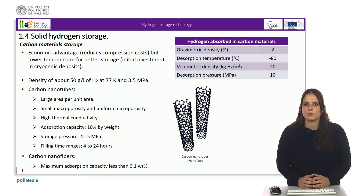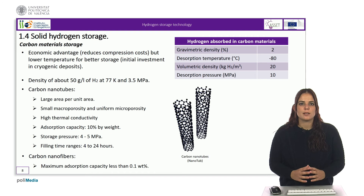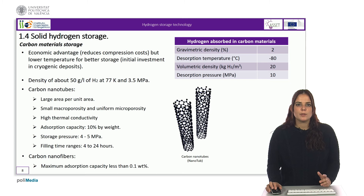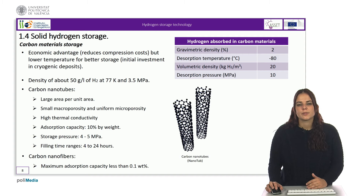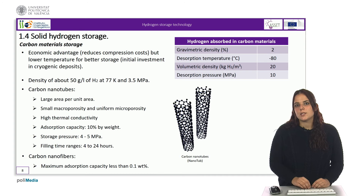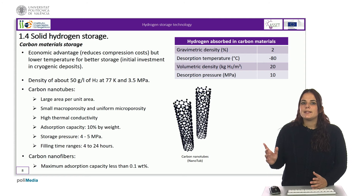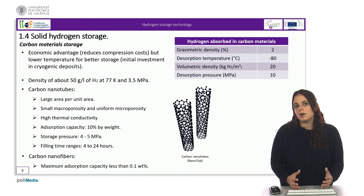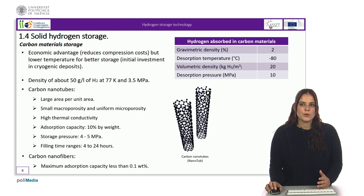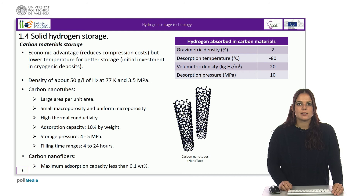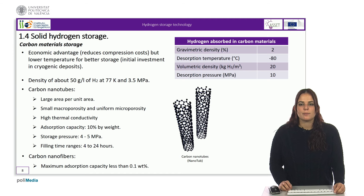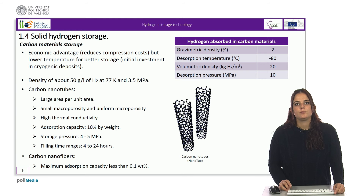There are two options for storage by absorption. The first is to use carbon nanotubes, which are small tubes that have a large area per unit area, small macroporosity, uniform microporosity, high thermal conductivity, and an absorption capacity of 10% by weight. Research is focused on how to produce nanotubes at competitive prices. Nanotubes are interesting because of their nanometric size with extremely small pores, and the interior of the tube is a potential site for hydrogen absorption. Carbon nanotubes also offer more absorption sites because the nanotubes can bind to each other, providing additional absorption sites to the internal cylinder formed by the nanotubes. The storage pressure is about 4 to 5 Megapascals and the filling time ranges from 4 to 24 hours.